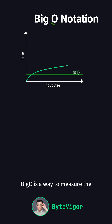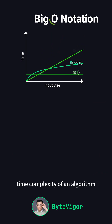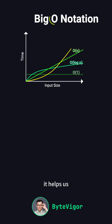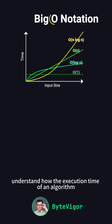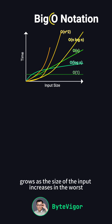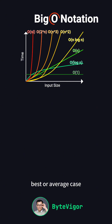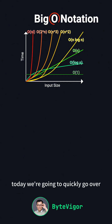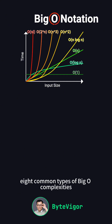Big O is a way to measure the time complexity of an algorithm. It helps us understand how the execution time of an algorithm grows as the size of the input increases in the worst, best, or average case. Today, we're going to quickly go over eight common types of Big O complexities.